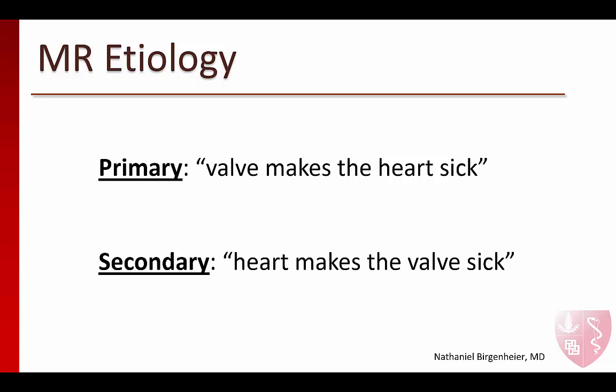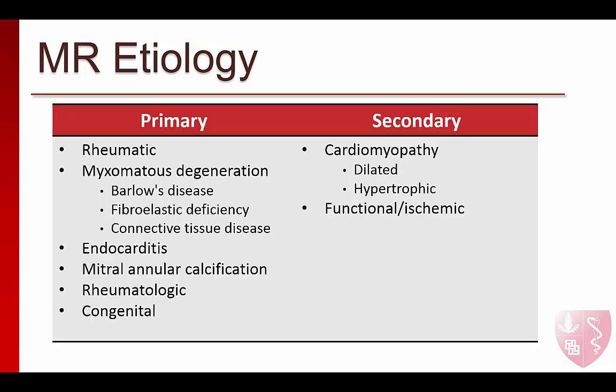In secondary MR, also known as functional MR, the heart makes the valve sick. Left ventricular failure can cause valvular regurgitation through several mechanisms. LV dilation and wall motion abnormalities can cause displacement of the papillary muscles and leaflet tethering, such that leaflets do not coapt appropriately in systole. A dilated valve annulus from a dilated failing ventricle may also worsen the coaptation defect and regurgitation. Management of secondary MR is not as straightforward and could be either medical or surgical. This slide lists the numerous causes of mitral regurgitation, subdivided by their primary or secondary etiology.